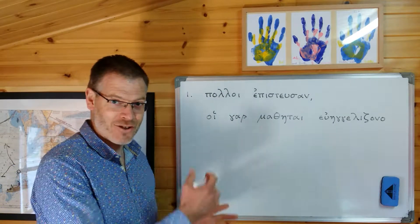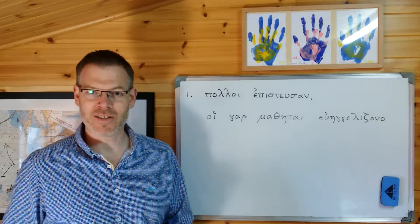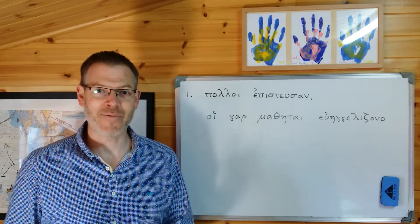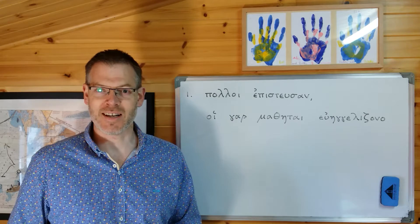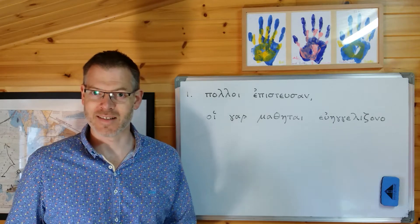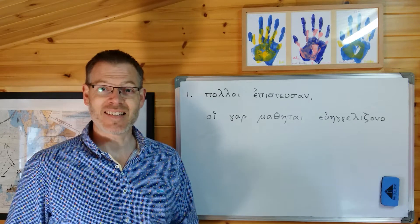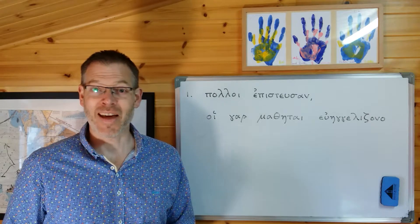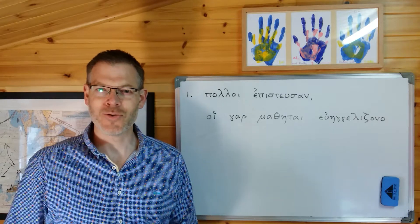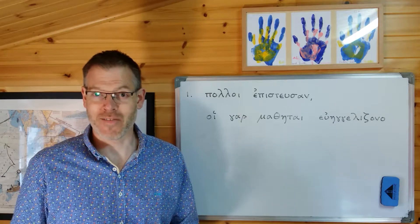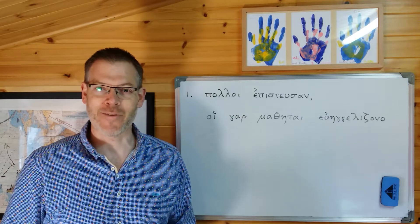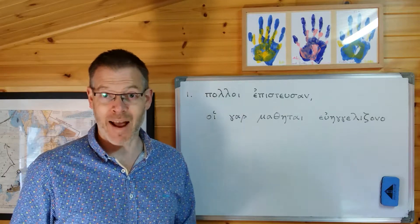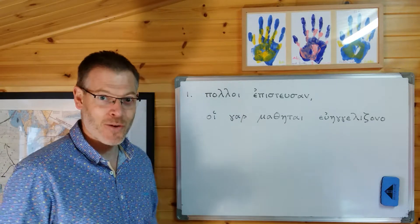I'll explain what that means first, and then I'll show you. A post-positive word is a word that cannot appear and never appears first in a clause or in a sentence. It always appears second, but when you translate it into English, that feature disappears. We don't use post-positive conjunctions, and therefore you need to remember to move the word one word back in the sentence.